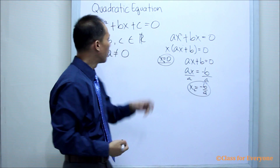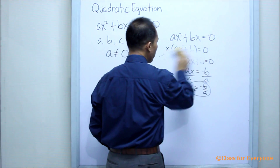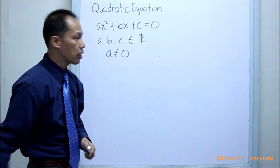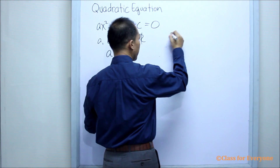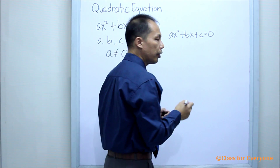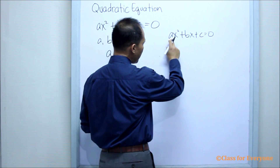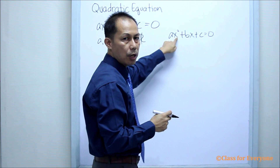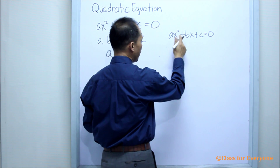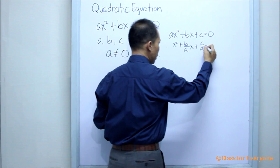Now, suppose nothing is equal to zero — A, B, and C are all not equal to zero. So we now have a complete quadratic equation in the form AX squared plus BX plus C equals zero. To find the value of X, we will use completing the square. We need the numerical coefficient of the quadratic term to be equal to one, so we divide all terms by A, giving us X squared plus B over A times X plus C over A equals zero.